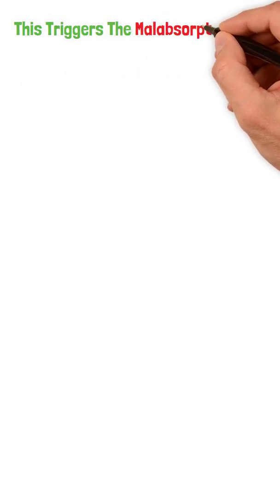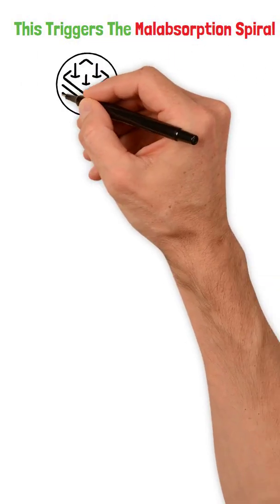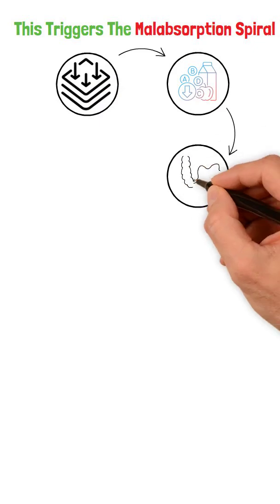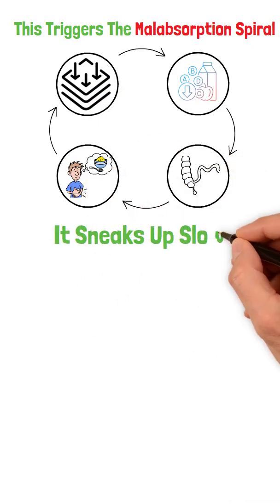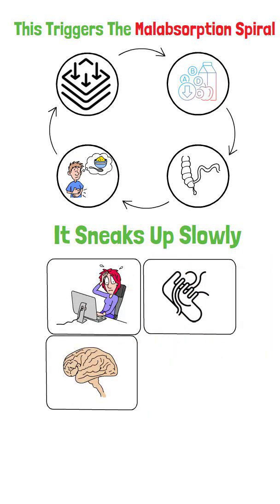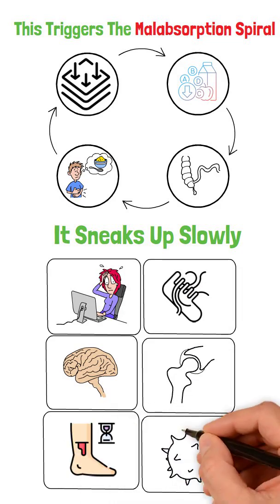This triggers the malabsorption spiral: poor absorption, deficiencies, slower gut repair, even worse absorption. It sneaks up slowly—fatigue, hair loss, brain fog, weak bones, slow healing, frequent infections.